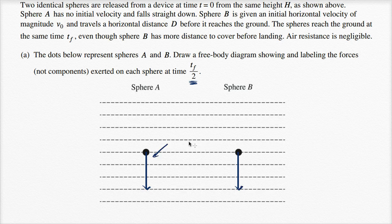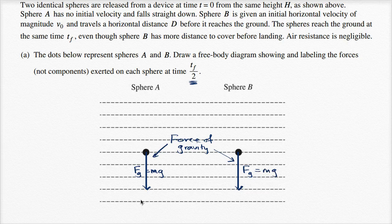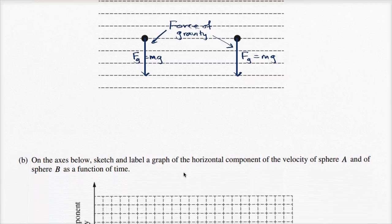While both of them are in flight, the only force acting on each of them is just going to be the force of gravity. Since the spheres are identical, the force of gravity is going to be identical — they have the same mass. So that right there is the force of gravity on Sphere A, and that is the force of gravity on Sphere B. We label it as f sub g, or m times the gravitational field. While they're mid-flight, with air resistance negligible, the only force acting on them is the force of gravity.